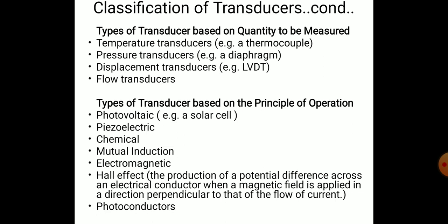Transducers can also be classified by principle of operation. Some work on photovoltaic principles like solar cells, some on piezoelectric principles, some on chemical principles, some on mutual induction, and some on electromagnetic principles. The Hall effect — the production of a potential difference across an electric conductor when a magnetic field is applied perpendicular to the flow of current — is another operating principle. Photo conductors based on light are also used.